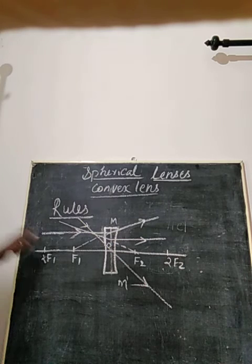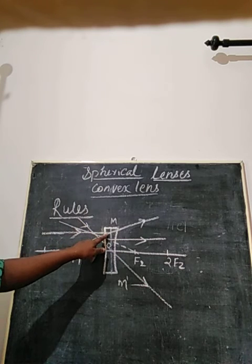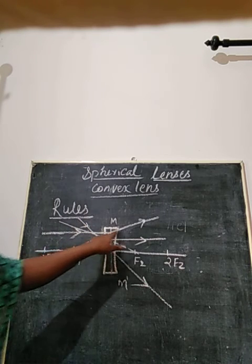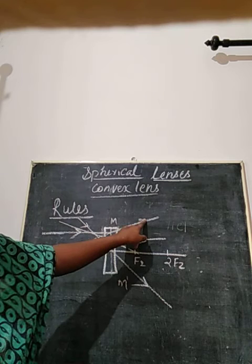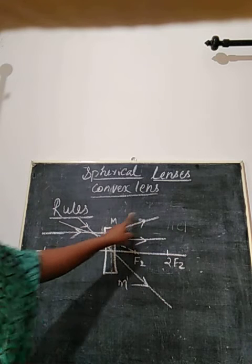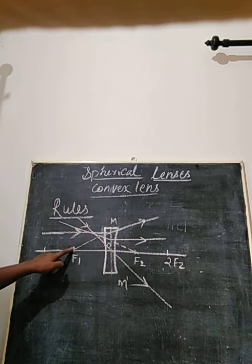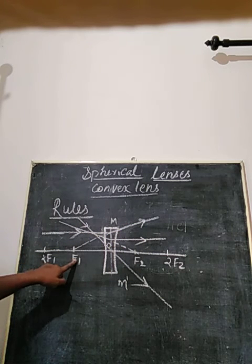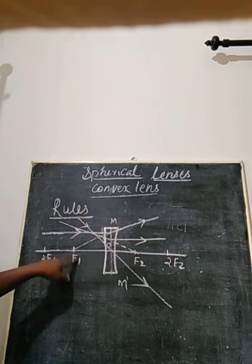To recap: if a ray is parallel to the principal axis, that ray will emerge in a particular direction but appears to be coming from f1 of the concave lens. That is the first rule.